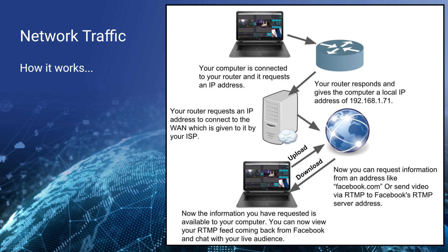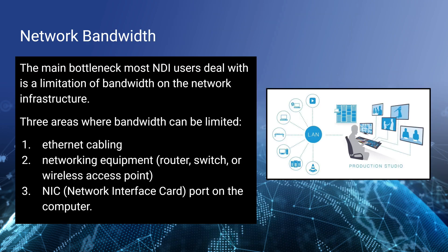When you live stream via RTMP to Facebook, you are using the upload bandwidth available through your router and internet service provider. When you preview your live stream and read comments through Facebook, you're actually downloading that information requested through your router and ISP to Facebook's servers and back. Now the main bottleneck that NDI users deal with is actually on the local area network — it has to do with the bandwidth available to send and receive video. The three areas where you might be limited: one is the cabling itself.